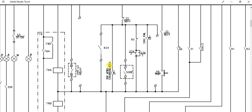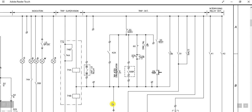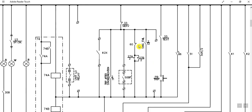There are other ways also. If there is an ABT panel — auto bus transfer panel — after synchronization, this can be tripped. This is 50BF — this path will be followed when there is circuit breaker failure. If this contact is closed, the breaker will be tripped. This is the 60 contact, and 27 is under-voltage — 27 AB. This is another path. If synchronization fails, this path will be energized.